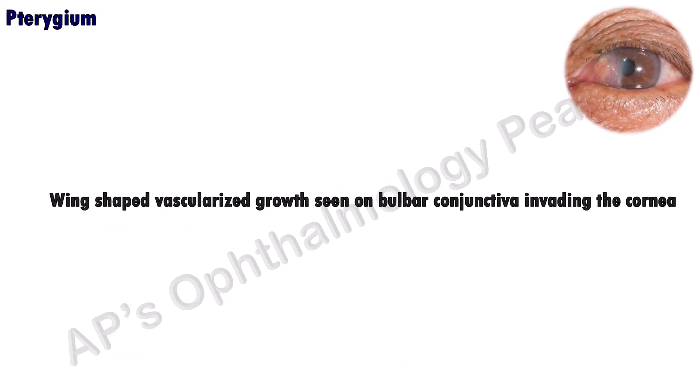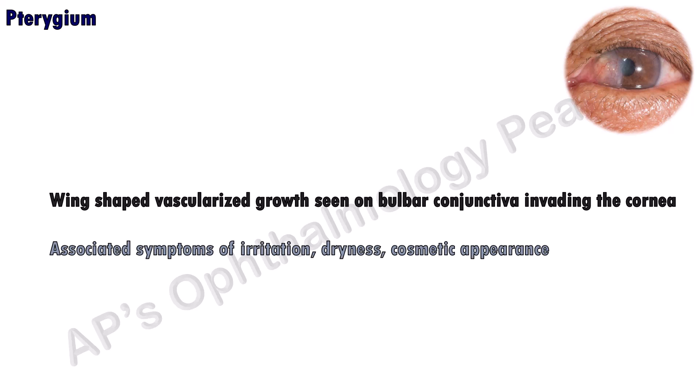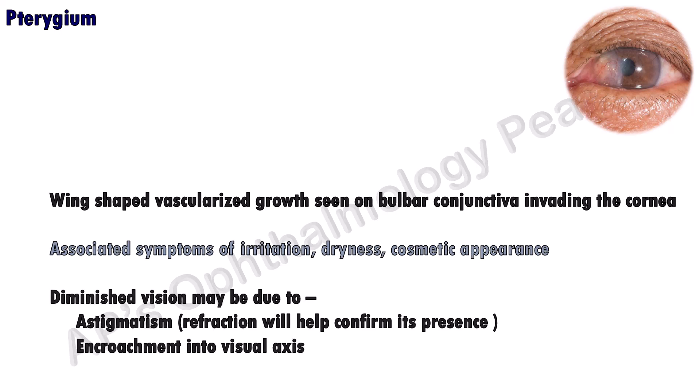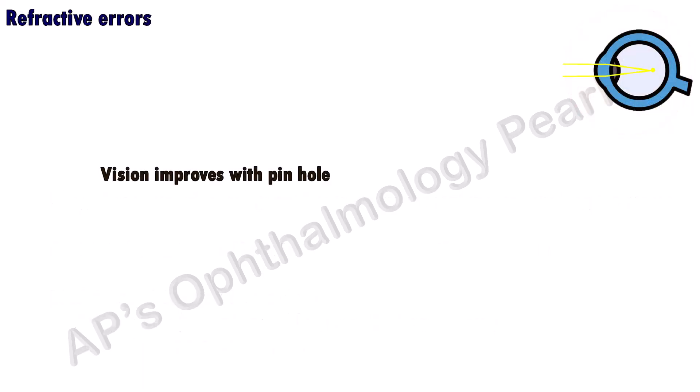Pterygium presents as a wing-shaped vascularized growth on the bulbar conjunctiva invading the cornea. Associated symptoms of irritation and dryness may be present. The diminution of vision in a pterygium can be due to induced astigmatism — initially a with-the-rule astigmatism, which can become irregular astigmatism in advanced cases — or due to obstruction of the visual axis. A refraction will help determine the presence of astigmatism.